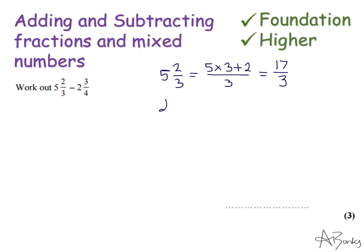And 2 and 3 quarters. To get my numerator, I'm going to do 2 times 4, add 3 as the numerator, leave my denominator as it is. That's still going to be a 4. 2 times 4 is 8, add 3 is 11, so it's 11 over 4.